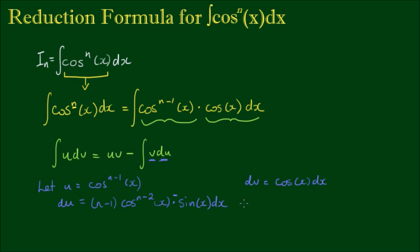To find v, we integrate dv. So v equals the integral of cosine x, which is sine x. Now we have all of the parts and can apply the integration by parts formula.